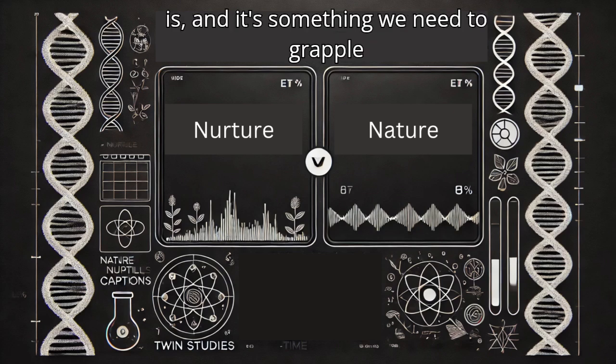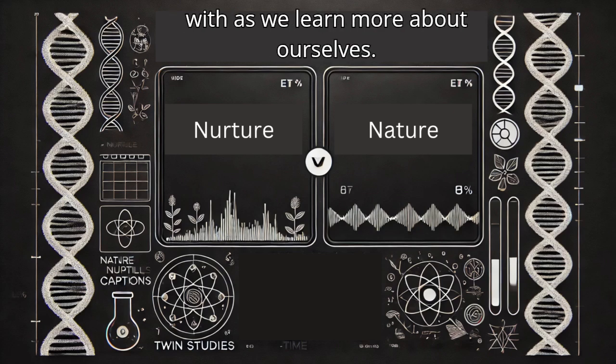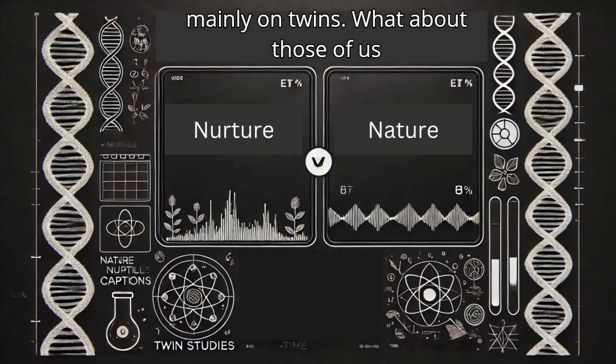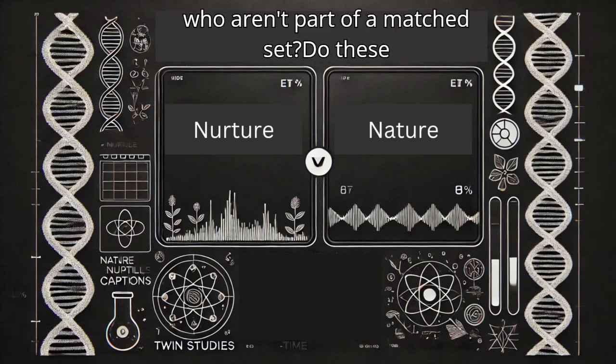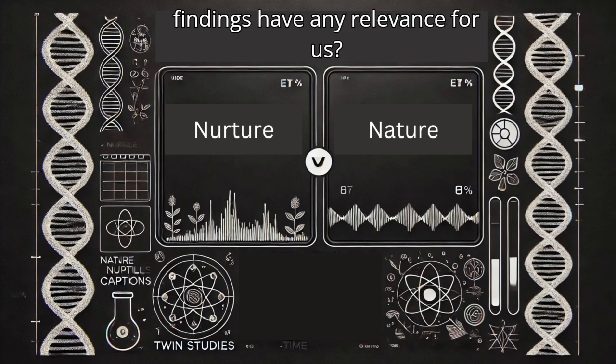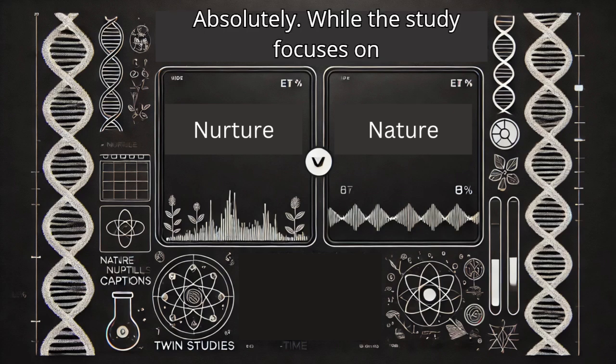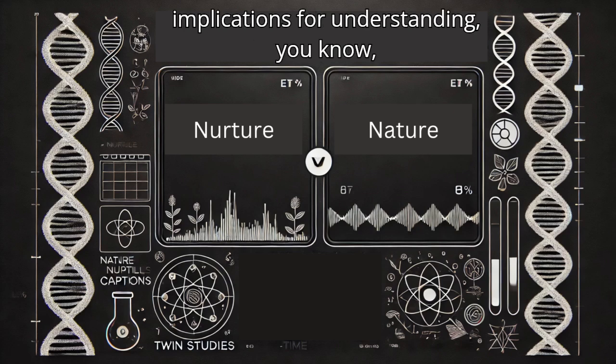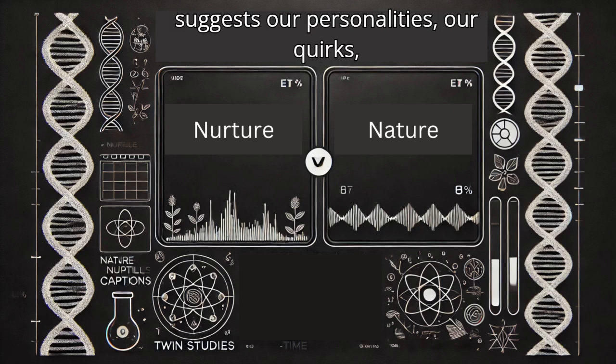It certainly is. And it's something we need to grapple with as we learn more about ourselves. This deep dive is really making me rethink some things. But we've focused mainly on twins. What about those of us who aren't part of a matched set? Do these findings have any relevance for us? Absolutely. While the study focuses on twins, its findings have significant implications for understanding human nature as a whole. It suggests our personalities, our quirks, even our vulnerabilities might be more deeply rooted in our biology than we previously thought.